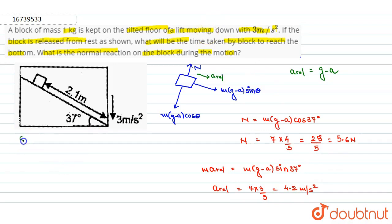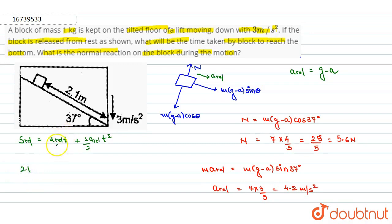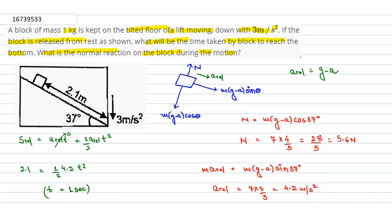Using the equation of motion: s = u_relative × t + ½ × a_relative × t². Here s = 2.1 m, u_relative = 0 (released from rest), so 2.1 = ½ × 4.2 × t². Solving, we get t = 1 second.